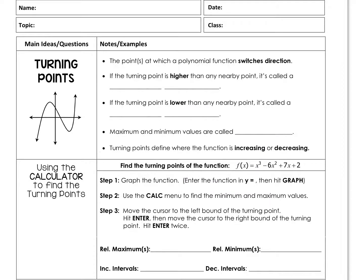When we had the quadratic, it generally decreases, hits a turning point, and then increases — that vertex is that turning point. With a cubic, it also increases, reaches a turning point and starts to decrease, then hits another turning point and increases. We've got this idea of a turning point — it's when that polynomial switches direction. If the turning point is higher than any nearby point, it's called a relative or local maximum. If lower, it's called a relative or local minimum. Maximum and minimum values are also called extrema, and the turning points are where the function switches between increasing and decreasing.